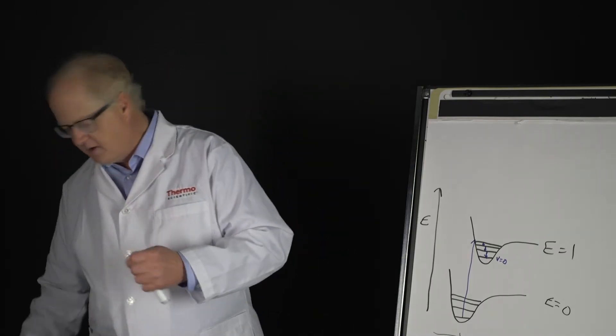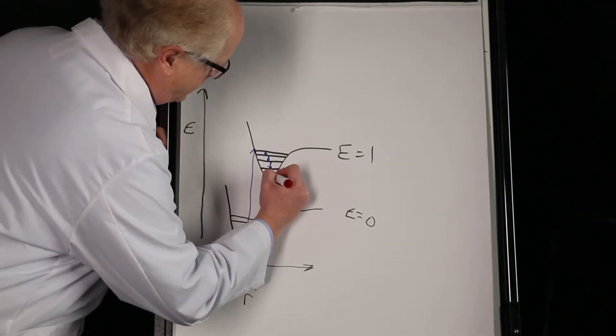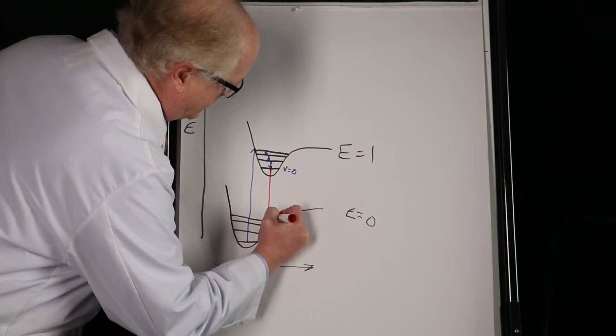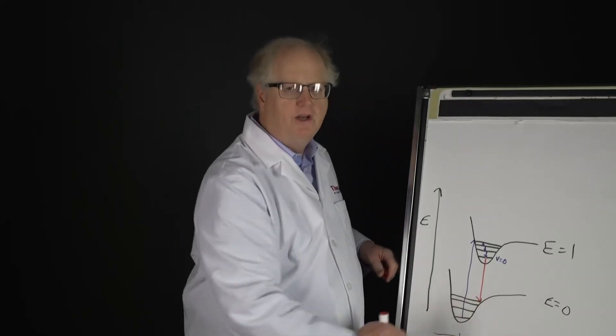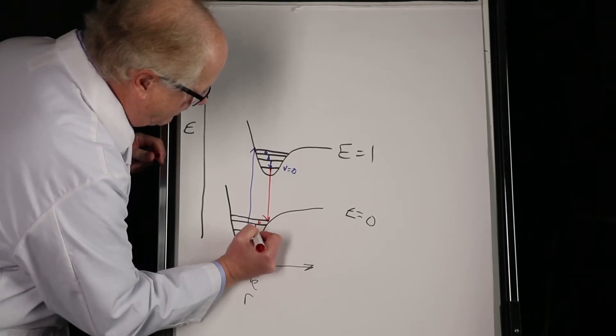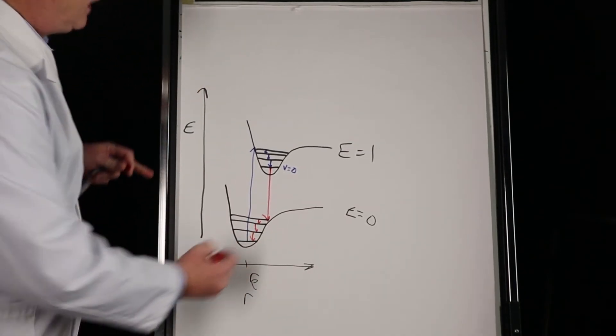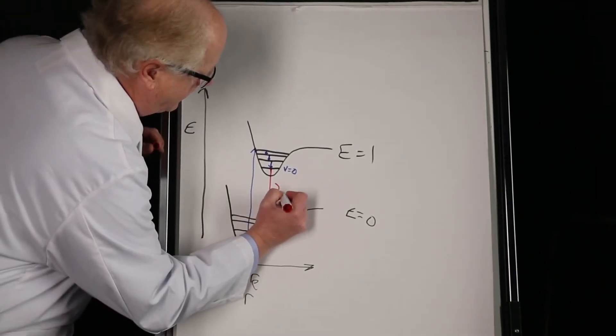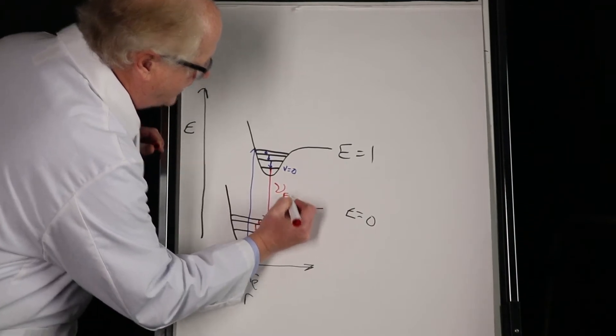And then from there it will emit a photon of light, again going to the edge for the same reason as before, the Franck-Condon factors. And then it will fall down inside that, but this right here is going to be the fluorescence emitted photon.